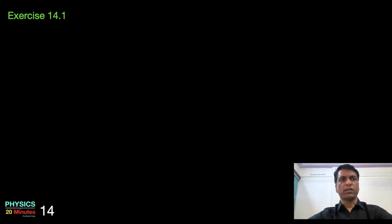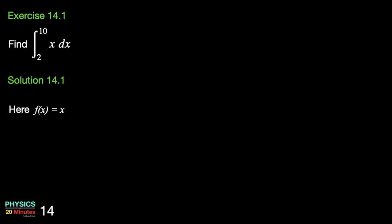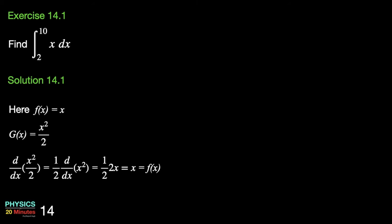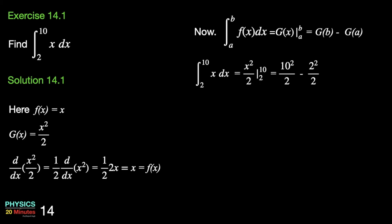Let us take an exercise to understand these concepts. Find the integral of x dx from 2 to 10. Here goes the solution. f(x) = x. Let g(x) = x²/2. Let us check if f(x) is the derivative of g(x): the derivative of x²/2 is (1/2) × 2x = x, which is indeed equal to f(x). Since f(x) is the derivative of g(x), the integral of f(x) from a to b is the difference in the value of g(x) between the two points. Therefore, the integral of x dx from 2 to 10 = [x²/2] from 2 to 10 = 10²/2 − 2²/2 = 48.